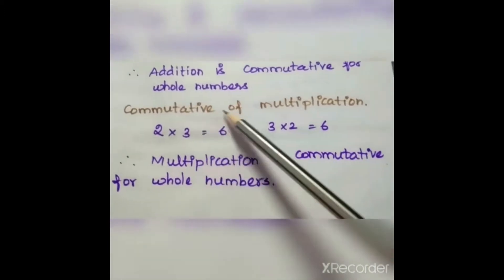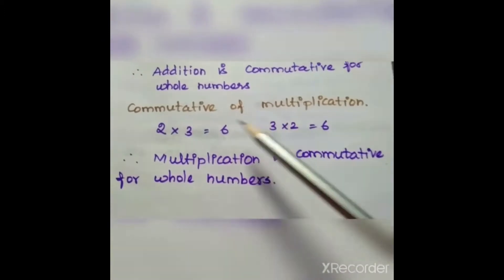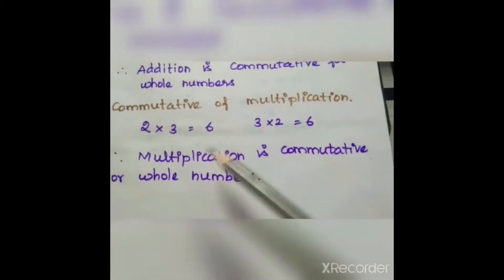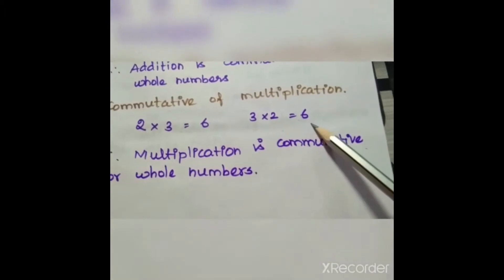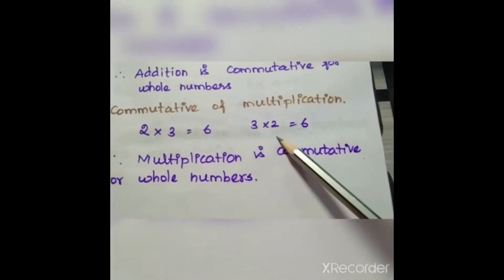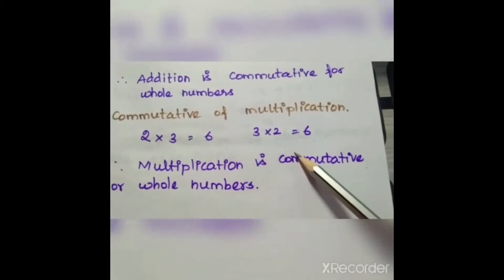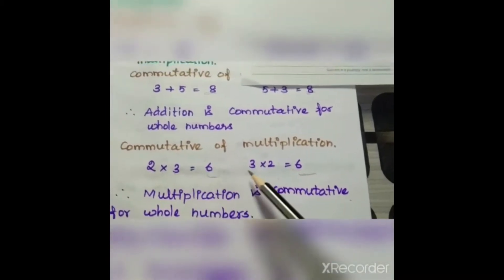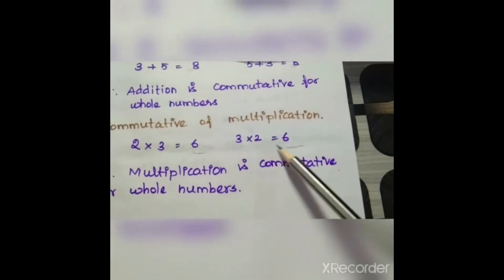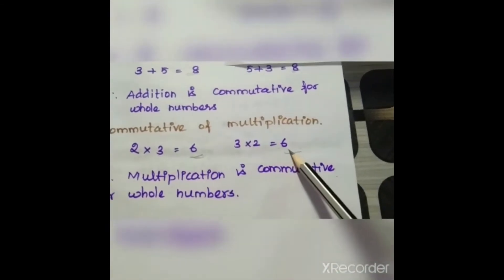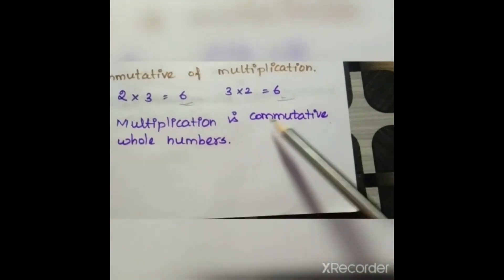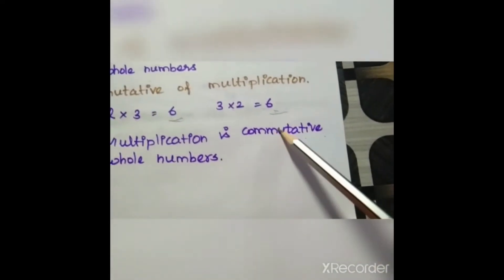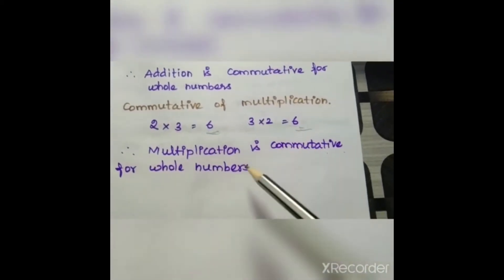Now let us see multiplication. 2 into 3 equals 6, and 3 into 2 equals 6. Here the same two whole numbers are multiplied and the order of the pair is changed, but the result is the same. So the whole numbers are commutative in case of multiplication also. We can say that addition and multiplication are commutative for whole numbers.